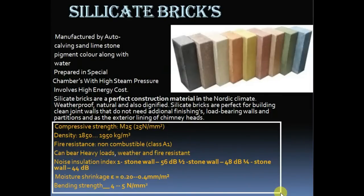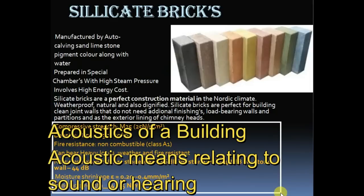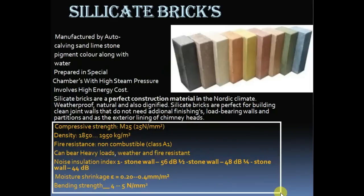The half-stone wall gives about 48 decibels and the one-fourth stone wall is about 44 decibels — you may have studied this in the acoustics of a building. The shrinkage — meaning when something dries up and the volume reduces — is about 0.2 to 0.04 mm, which is approximately 0.4 mm per meter. The bending strength is about 4 to 5 newton per mm square. This covers all the technical specifications of silicate bricks.